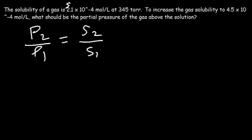P2 divided by P1 is equal to S2 divided by S1. So if this number is S1, this has to be P1. They have to correspond to each other. So this is going to be S2. And we're looking for the new partial pressure or P2.